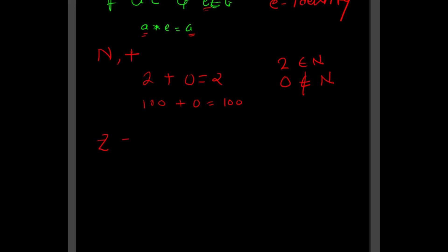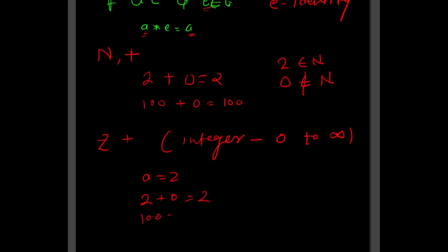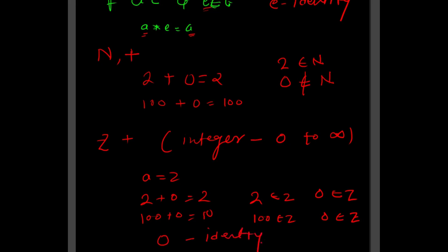Now let us take another example: the set of integers Z with operator plus. Integers include 0, so if a equals 2, then 2 plus 0 equals 2; and 100 plus 0 equals 100. Both 2 and 0 belong to Z, and 100 and 0 belong to Z. So 0 is the identity element for integers under addition.